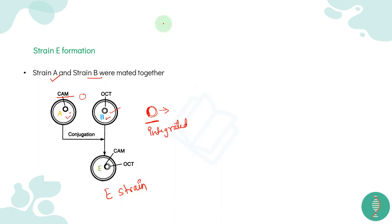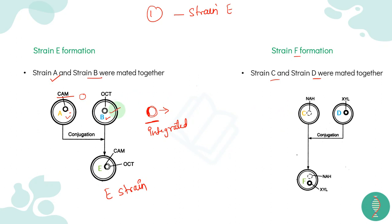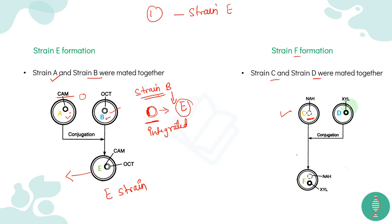The first step in formation is strain E: when A and B are conjugated together, we get strain E. Similarly, strain F is formed from C and D conjugating together. Remember — strain B underwent conjugation and became strain E. NAH is from strain C and ZYL is from strain D.